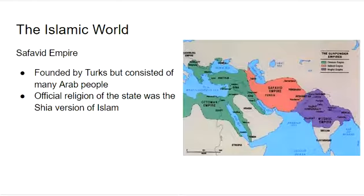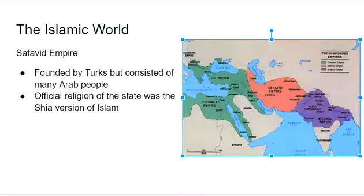Another empire is the Safavid Empire, also founded by the Turks, consisting of many Arab people. They're nestled between the Ottoman Empire and the Mughal Empire. They had a good relationship with the Ottoman Empire through trade. However, their official religion was the Shia or Shiite version of Islam, so there was a little tension between the Ottoman and Safavid empires.